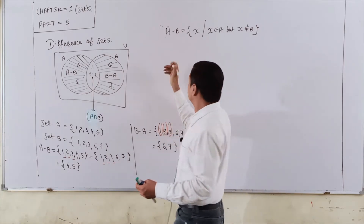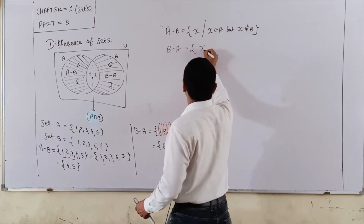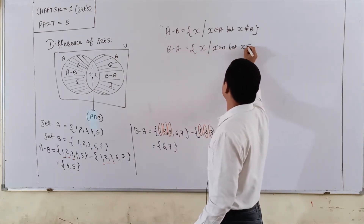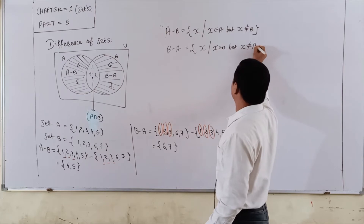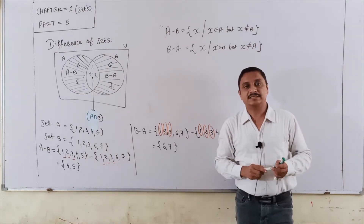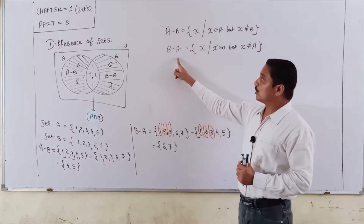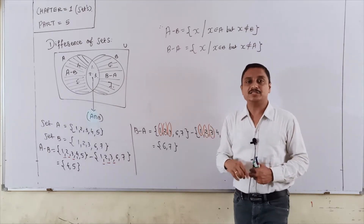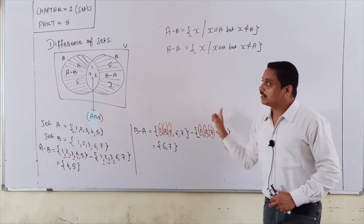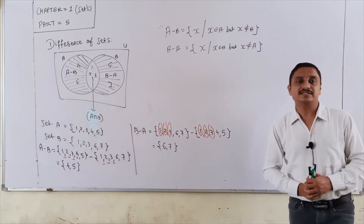And one more: B minus A is the set of X such that X belongs to B but X does not belong to A. It is B belonging to B but A has no belonging. So these are the total parts of our difference of sets.